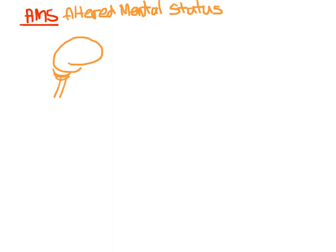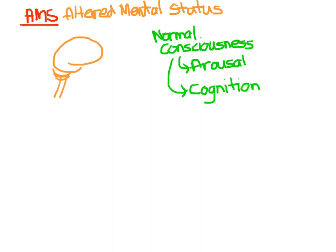In order to have normal consciousness, you need to have both arousal and cognition. Arousal is mediated by the reticular activating system, which is primarily housed in the brainstem, and this is mainly responsible for keeping us awake. Derangements of arousal is what we call delirium. Arousal can either be revved up, or it could be depressed. When it's revved up, you'll have people who are hypervigilant or agitated. Patients who are depressed are going to be lethargic, stuporous, or even comatose.